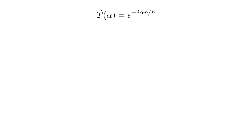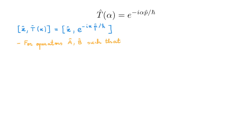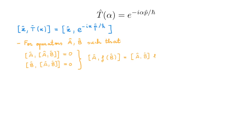Before proving that T(α) is indeed a translation operator, we need to find its commutator with the position operator: [x, T(α)] = [x, e^(−iαp/ℏ)]. For operators A and B that each commute with their commutator — i.e., [A, [A,B]] = 0 and [B, [A,B]] = 0 — we have [A, f(B)] = [A, B] · f′(B).